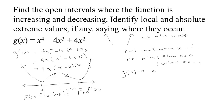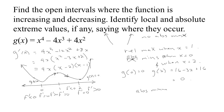Let's plug in to find the values. g(0) equals 0. For g(2): 16 minus 4 times 8 is 32, plus 4 times 4 is 16 — so 16 minus 32 plus 16 equals 0. Both minima occur at the value 0, making them absolute minima. The absolute minimum value is 0, occurring at both x equals 0 and x equals 2.